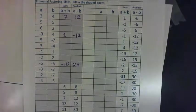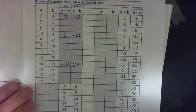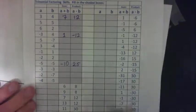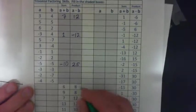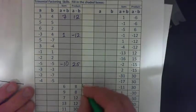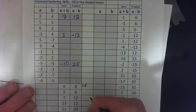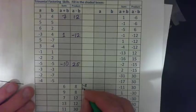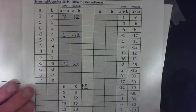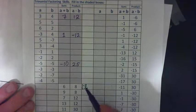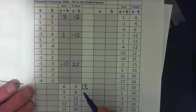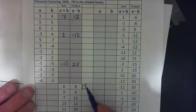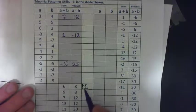What two numbers multiply to 8 and add to 6? One trick is to list the pairs of factors of 8: 1 times 8, 2 times 4. Is there anything else? 1 plus 8 makes 9 — that's not going to work — but 2 plus 4 makes 6.